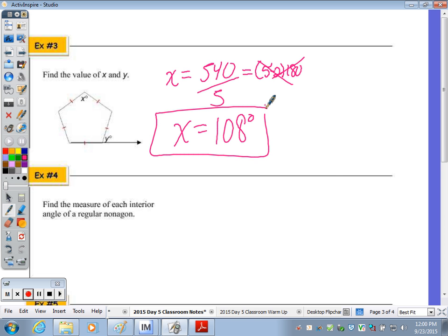Y, all the exterior angles always add up to 360, so 360 divided by 5. You could also utilize the relationship, well, if each angle is 108, its adjacent angle forms a linear pair. So rather than dividing 360 by 5, you could say y plus 108 is equal to 180 degrees.